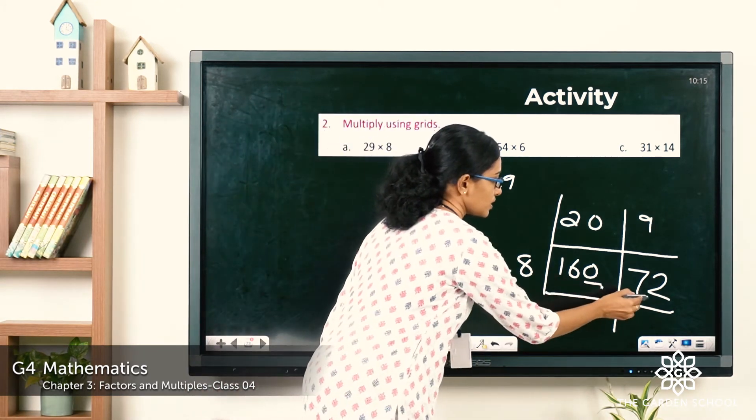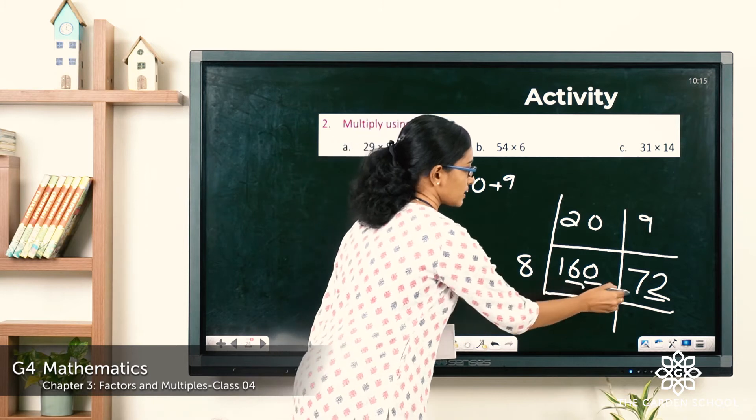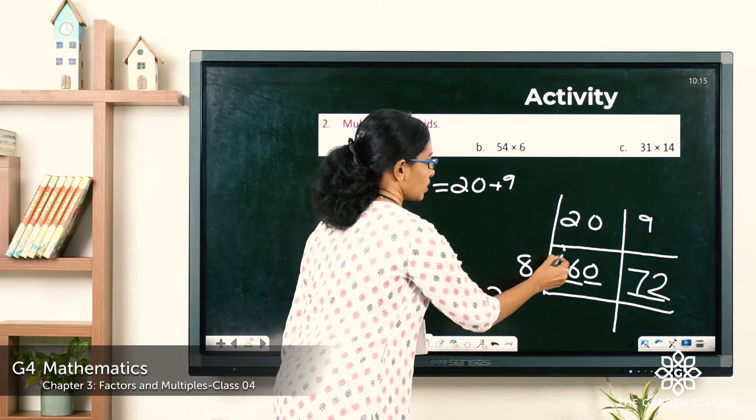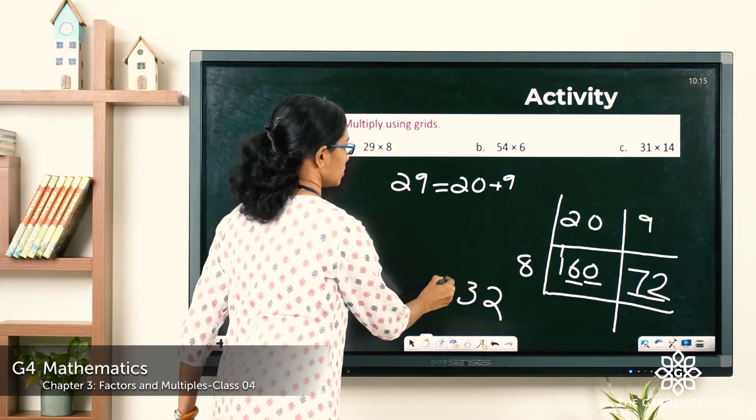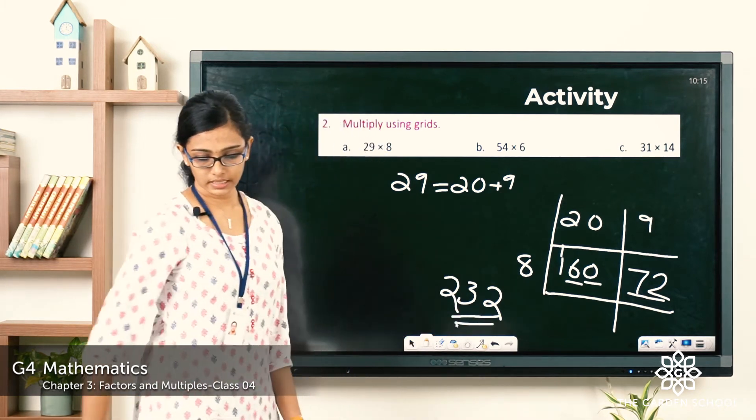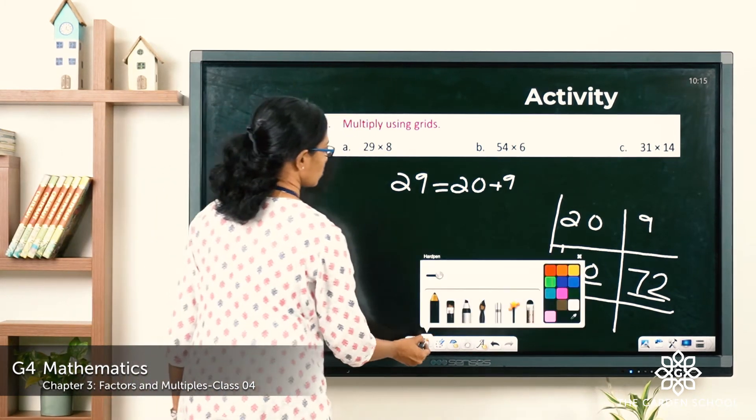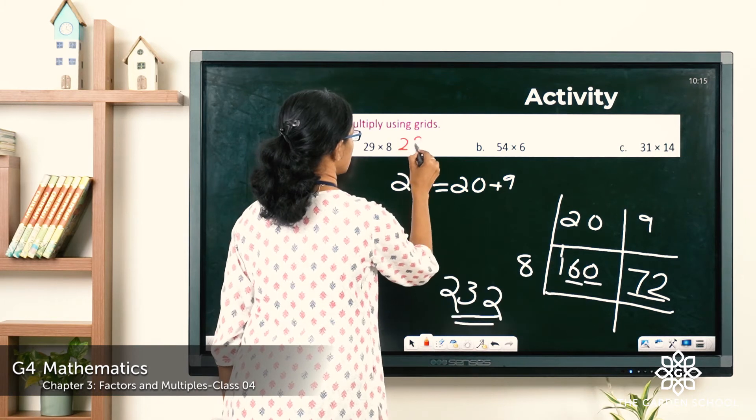So 0, 1 plus 2, that would be 3. 6 plus 7, it would be 13. Carry over 1 here. 1 plus 1, 2. So what is the answer here? Here it is 232.